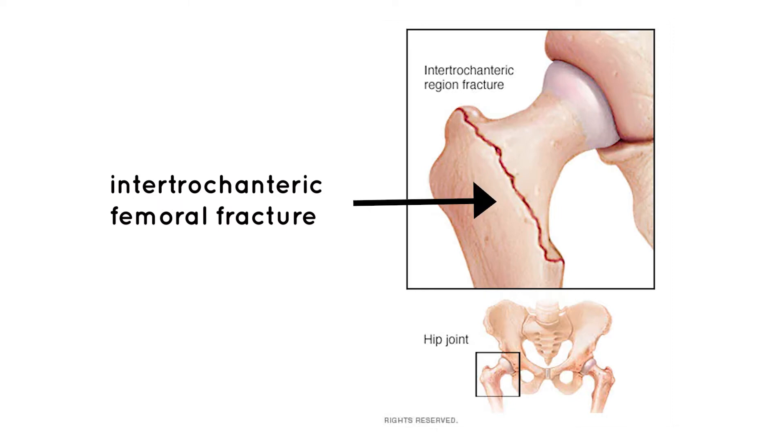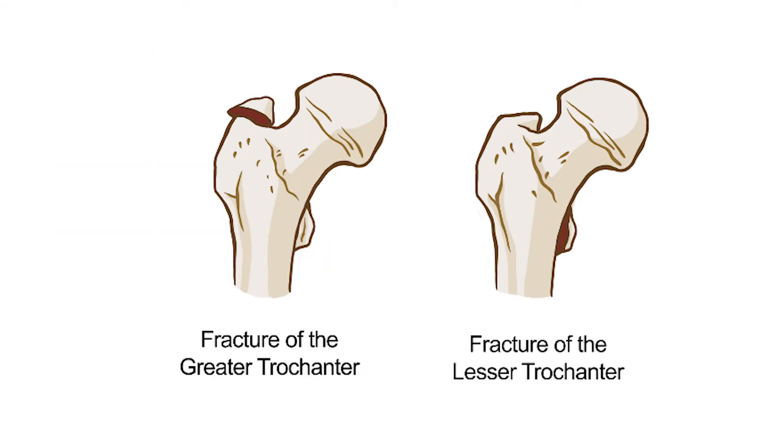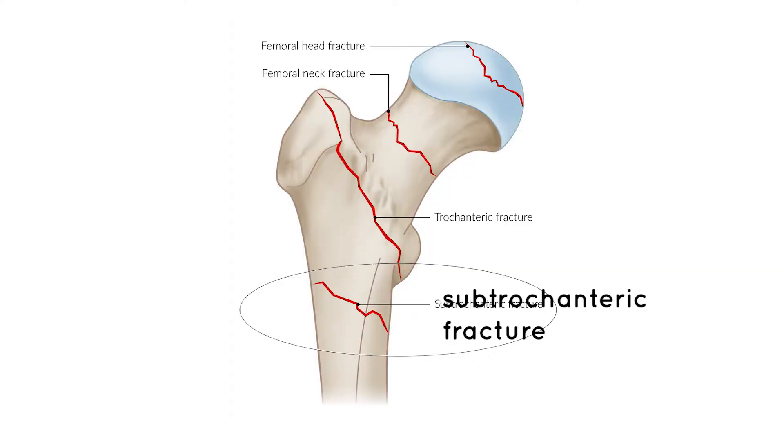Fractures along the intertrochanteric ridge or crest are called intertrochanteric fractures and are extracapsular. The greater trochanter can also sustain a fracture, called a fracture of the greater trochanter. Similarly, a fracture of the lesser trochanter exists. A fracture occurring just beneath the intertrochanteric ridge is called a subtrochanteric fracture. These are the different types of proximal femoral fractures and their classification as either intracapsular or extracapsular.